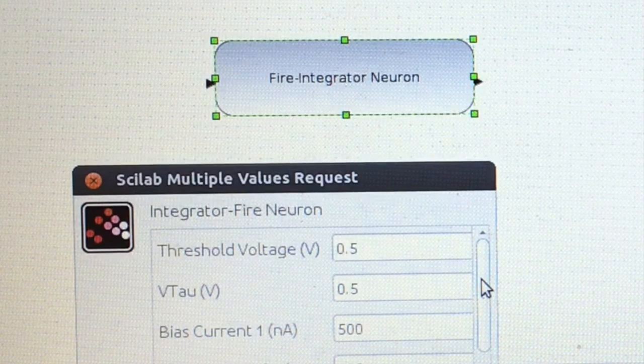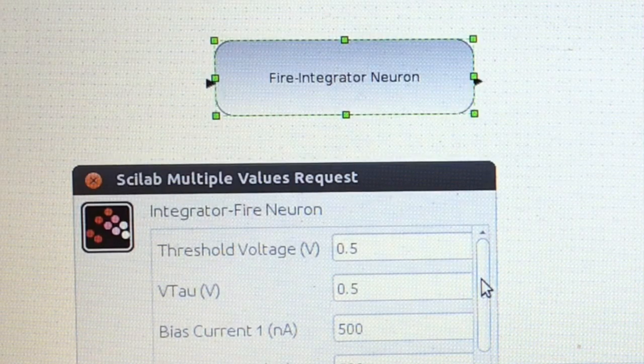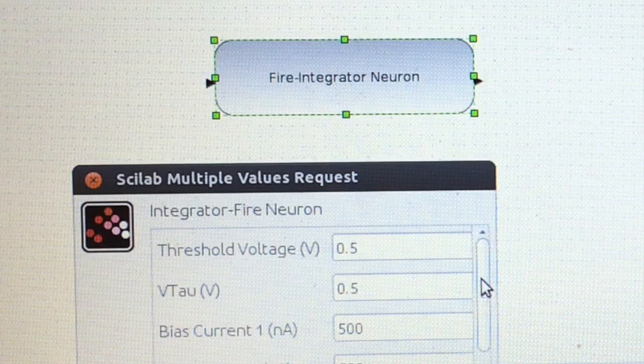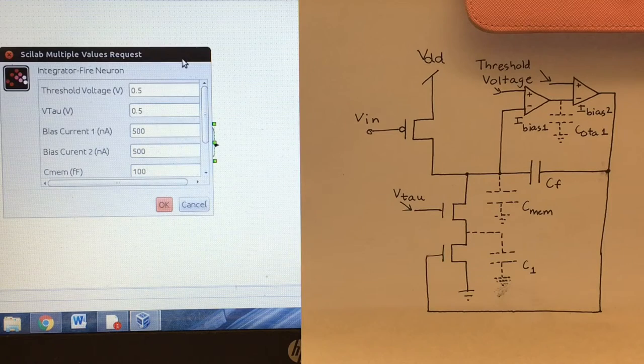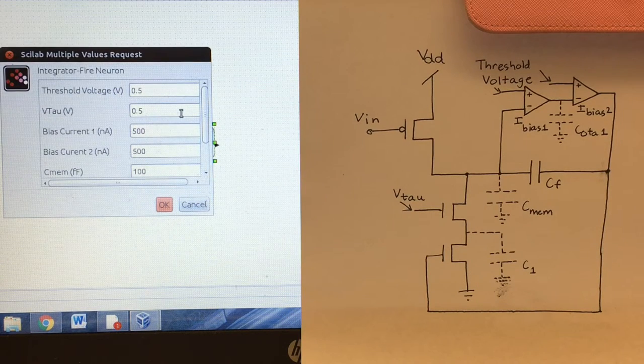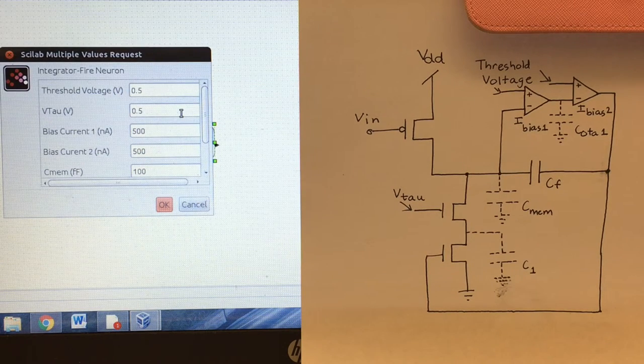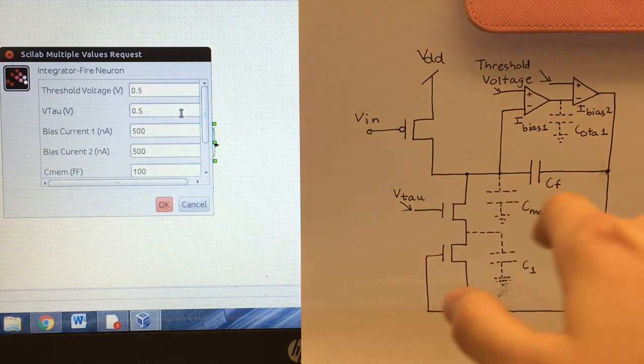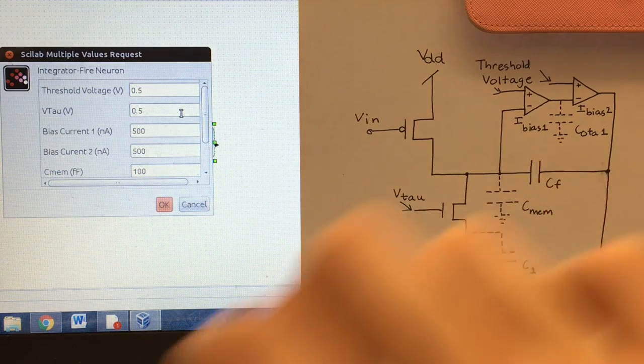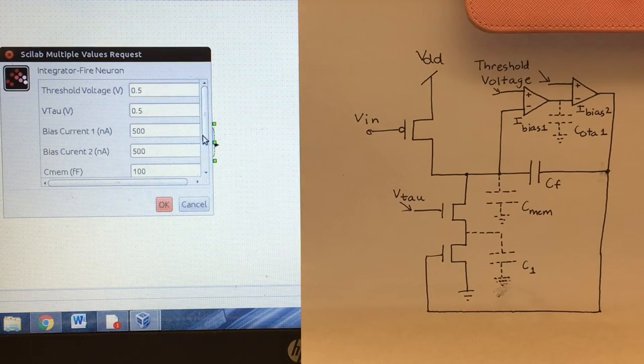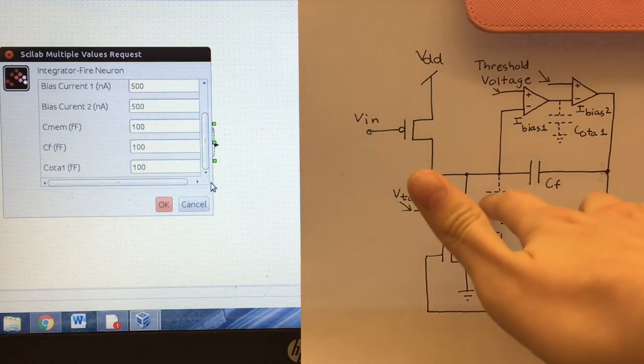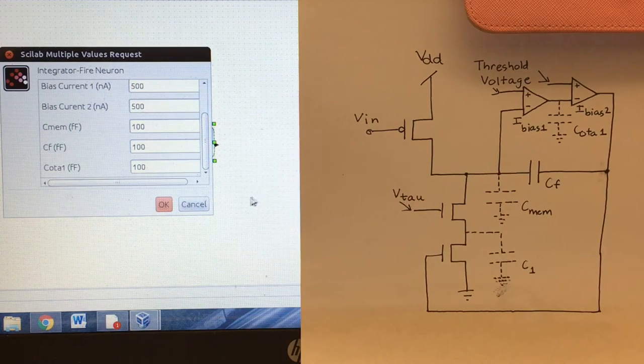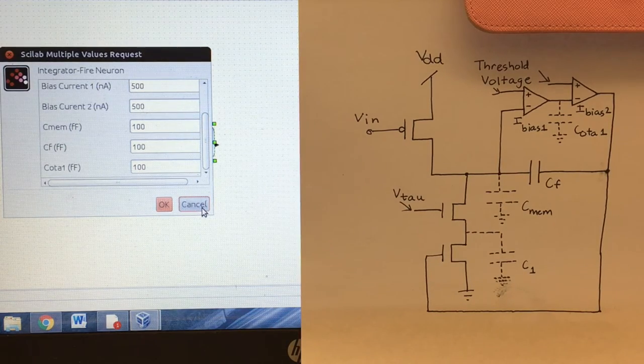Hi everyone. This is the block that we made for our fire integrator neuron based on the blank.si file. As you can see, we included the following parameters: threshold voltage, Vtau, bias current 1, bias current 2, Cmem which is a parasitic capacitor, Cf, and Cota1 which is another parasitic capacitor.